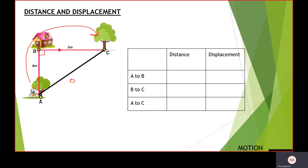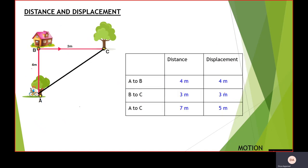For the displacement from A to C, we need to find the hypotenuse. Using the Pythagorean theorem: AB² + BC² = AC², so 16 plus 9 equals 25, and the square root of 25 is 5 meters. The displacement for A to C is therefore 5 meters.